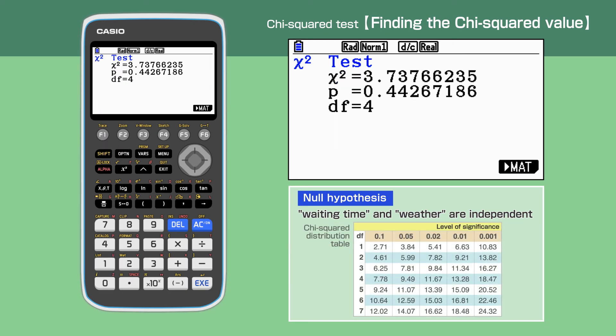From the Chi-Squared distribution table, the critical value is 9.49 when degree of freedom is 4 and the level of significance is 5%. The chi-squared value calculated is 3.74, which is smaller than the critical value. Hence, we accept the null hypothesis: weather and waiting time are independent.